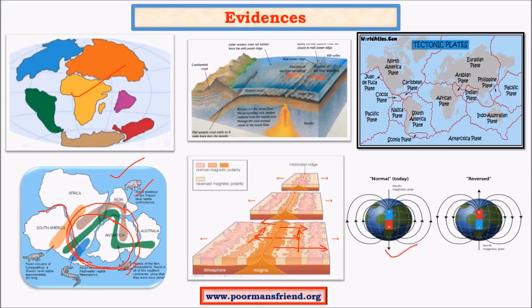The evidences for plate tectonics are quite similar to sea-floor spreading, with a few additional evidences such as gravitational anomaly and temperature differences.